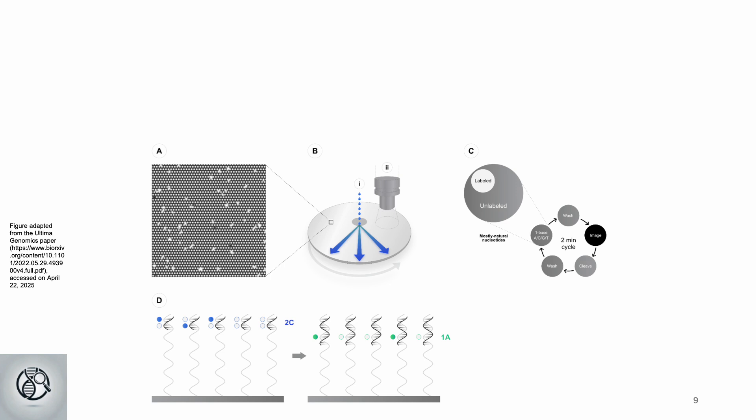Next, we see the incorporation of one adenine. Finally, we see the incorporation of three thymines, resulting in the sequence CCATTT.